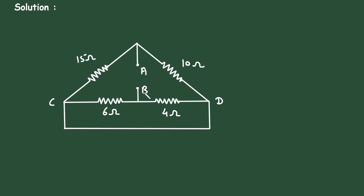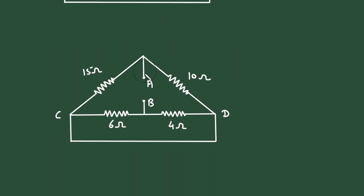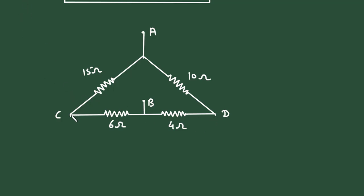Solution: here we can see if we redraw this circuit, then let's stretch this A and this B. The circuit will look like this — if we stretch A, it will go here. This is A, and if we stretch B and connect points C and D like this, it will look like this. Now we can stretch this point B. Now here we can clearly see this 15 ohm and this 10 ohm.